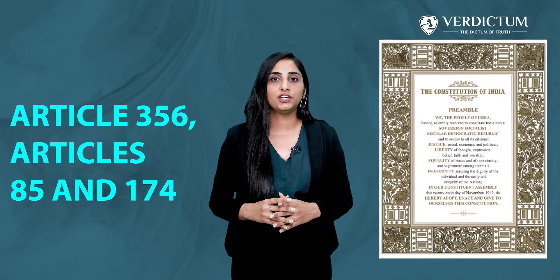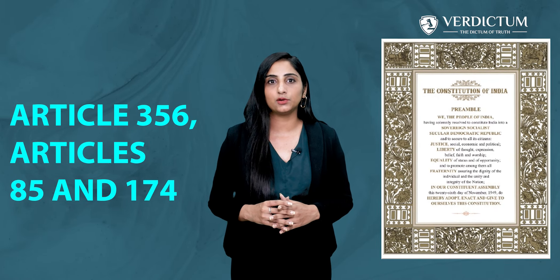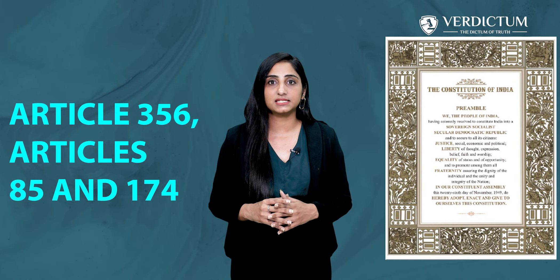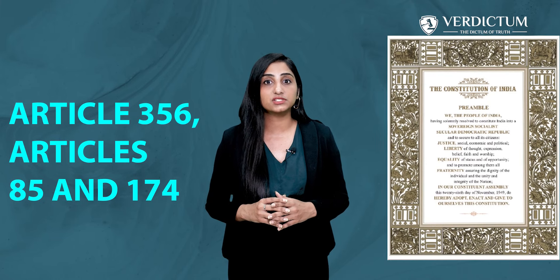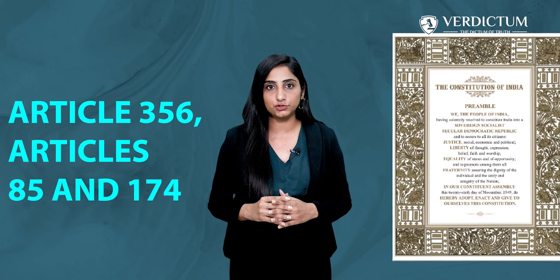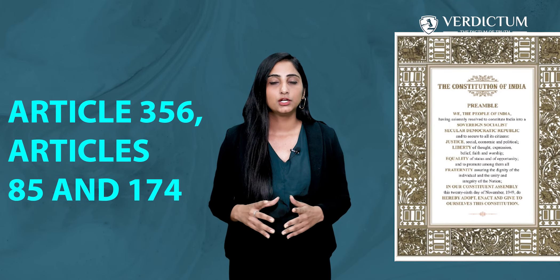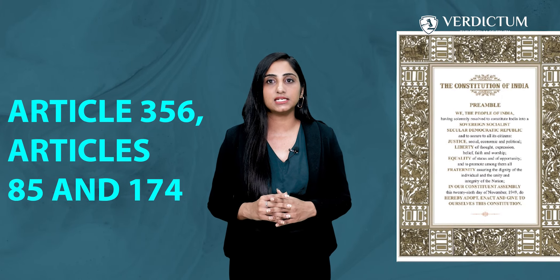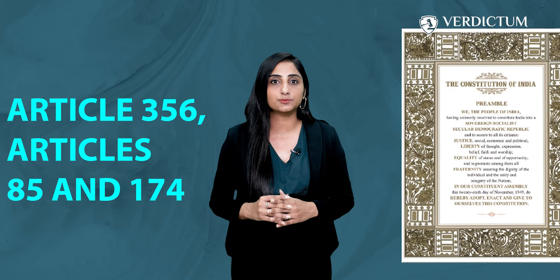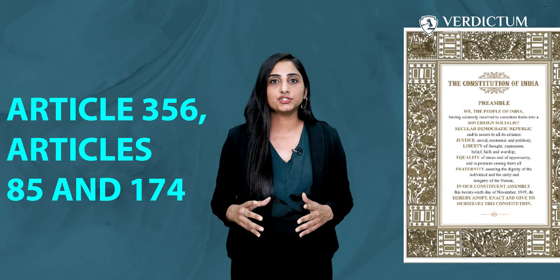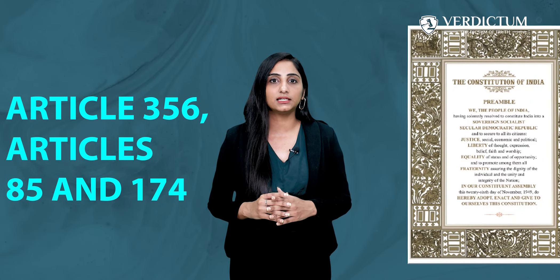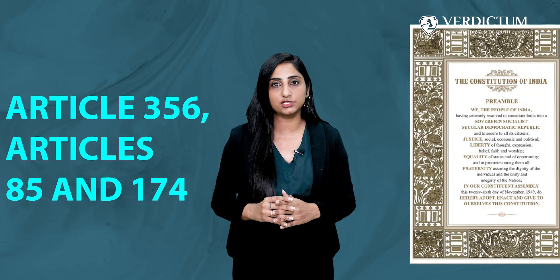4. Article 356, Articles 85 and 174. Article 356 allows the Centre to dismiss an elected state government and impose President's Rule. An amendment to this article may pave the way to prevent the premature dissolution of the House and assemblies. Notably, the emergency provisions contained in Article 356 were used to dissolve state legislative assemblies before the expiry of their tenure. In addition, circumstances such as a hung House, no-confidence motions, and other such events result in premature dissolution of the House.